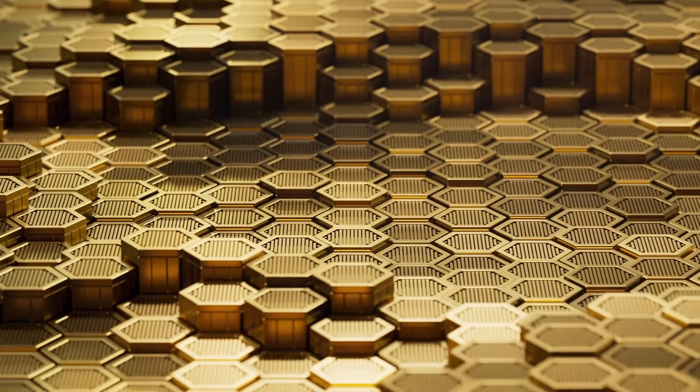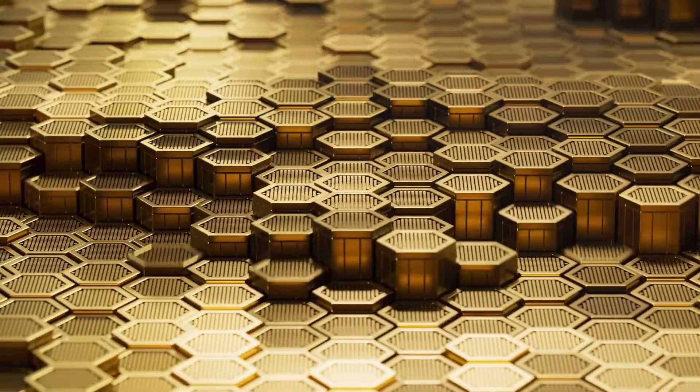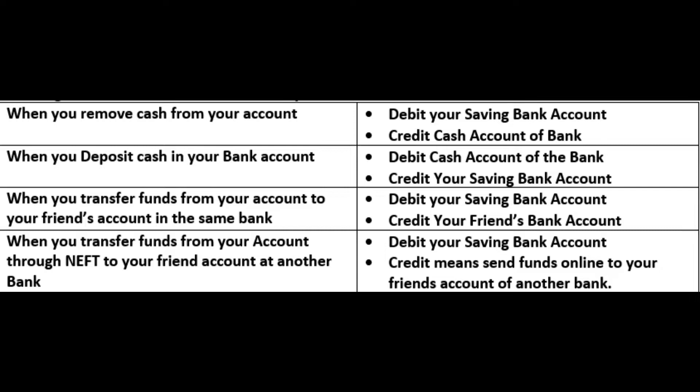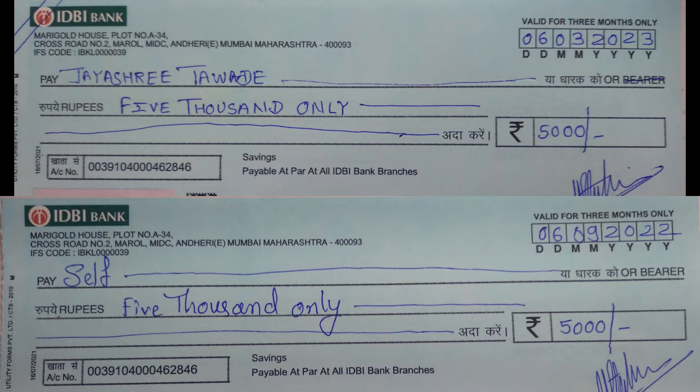As I mentioned in my earlier video, the golden rule of accounting is applied in every transaction of banking, and hence two entries come every time we do a bank transaction. Credit means deposit and debit means payment or withdrawal.